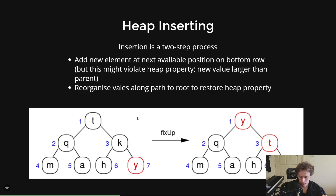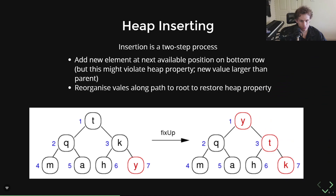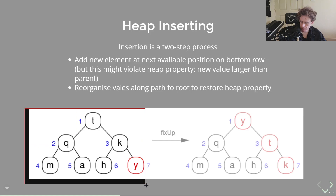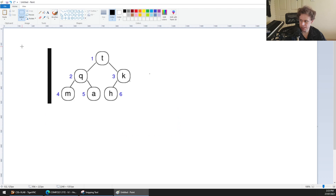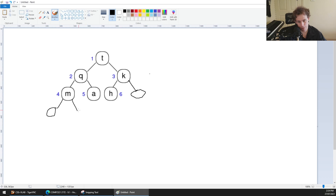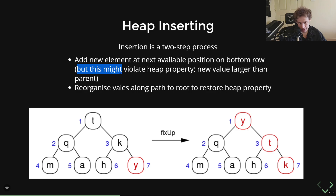Inserting into a heap is a two-stage process. The first stage is easy: you add the new element at the next available spot, because it's a dense tree — it always goes in the rightmost, bottommost position. So if I want to insert Y into a heap, it goes in the next slot. If I insert another element, it comes next, then the next one, and so on — it always follows this level-order pattern.